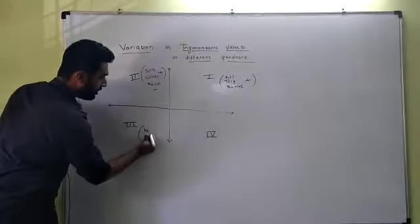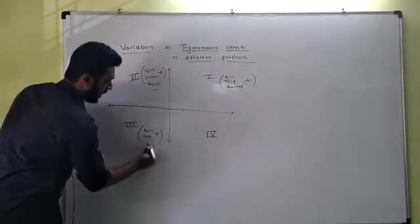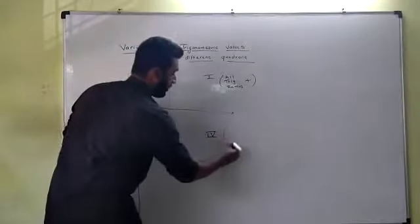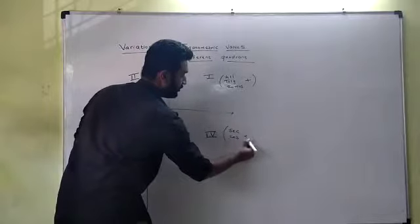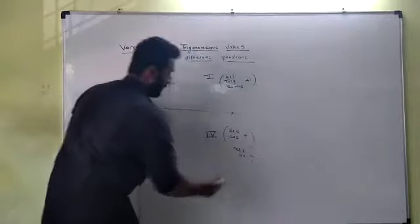In the same way, here tan and cot ratios will be positive, and rest all will be negative. And here, sec and cos ratios will be positive, and rest all will be negative.